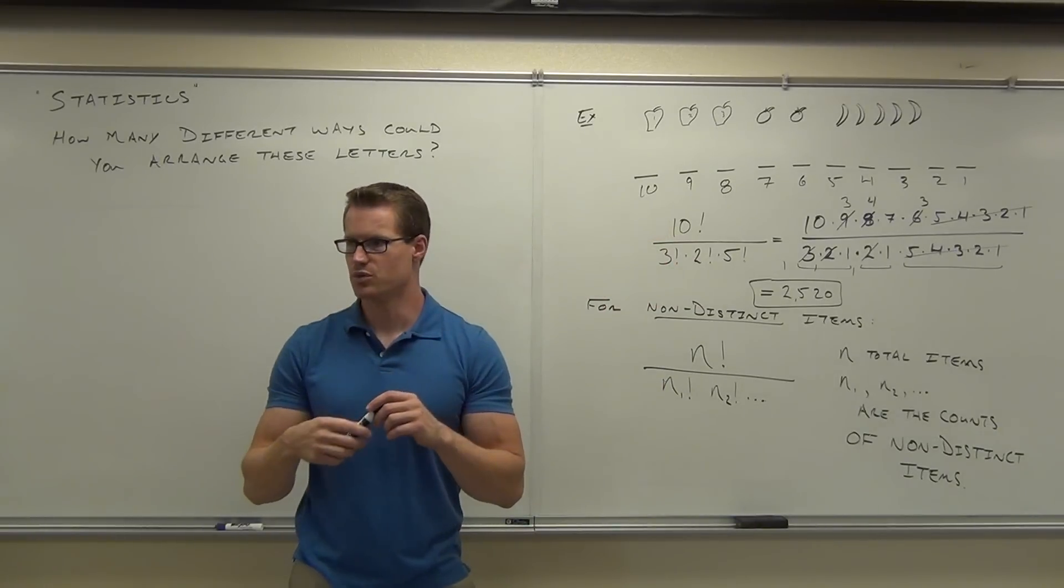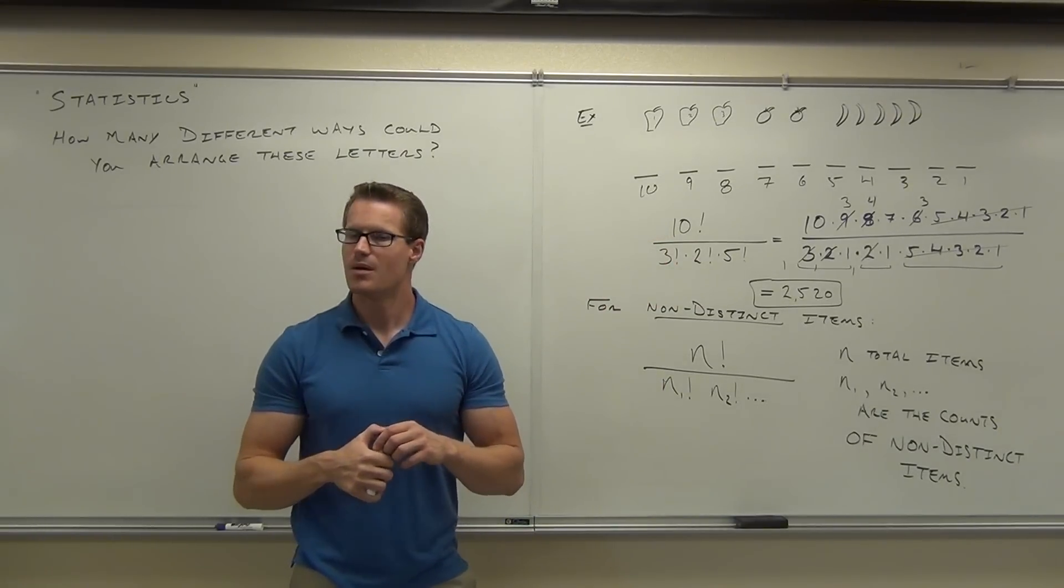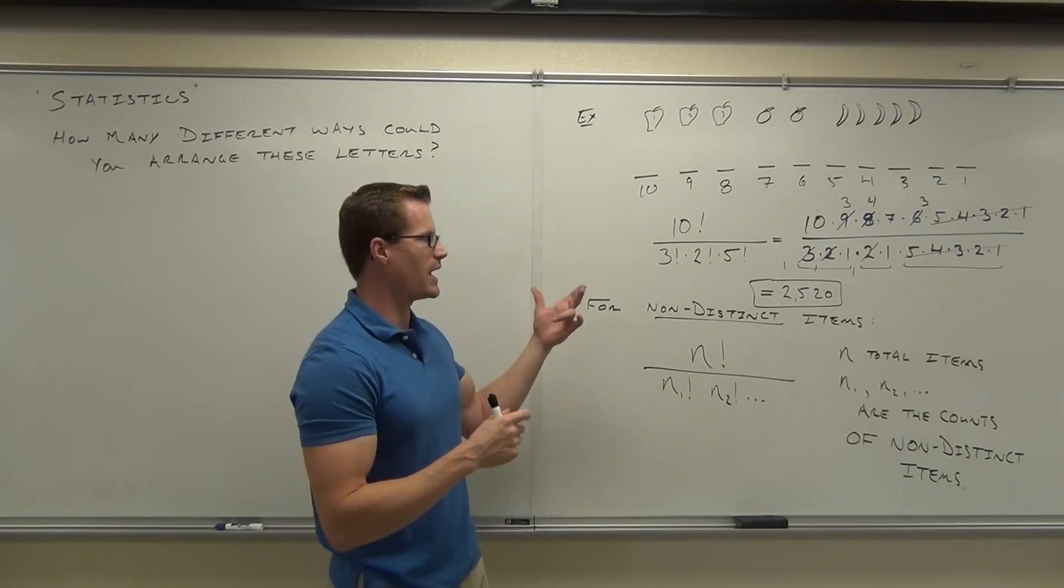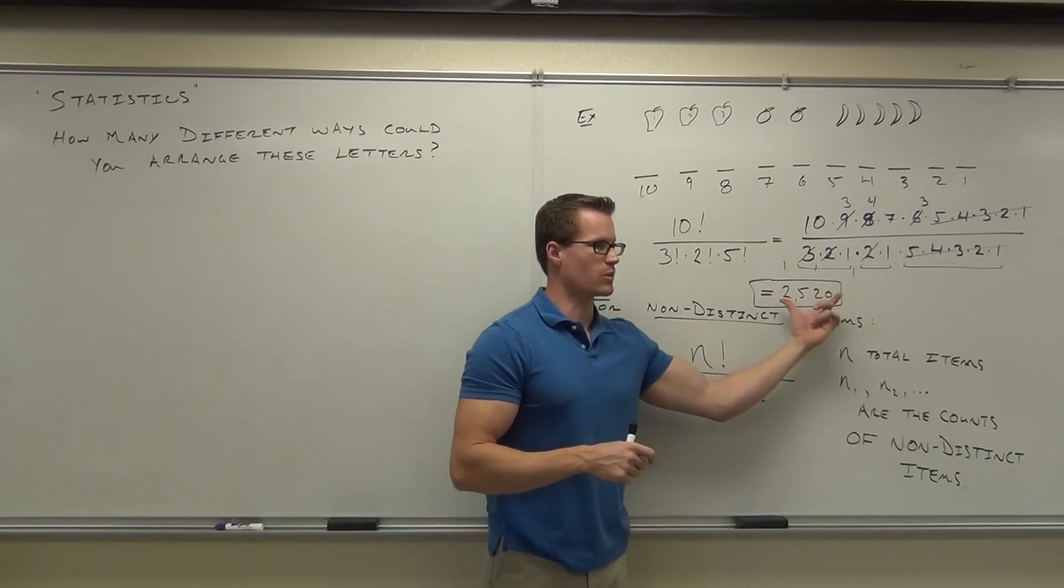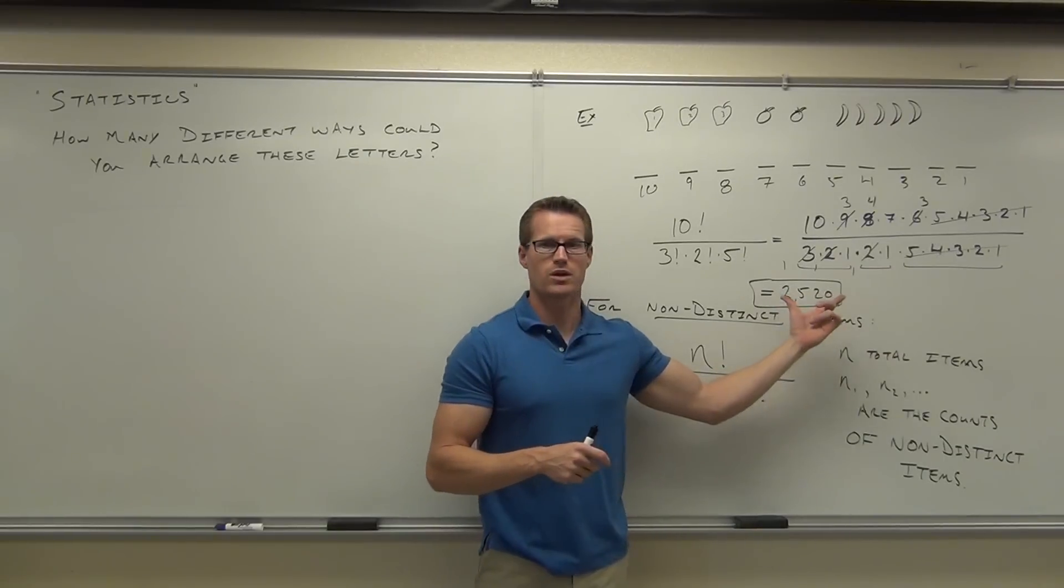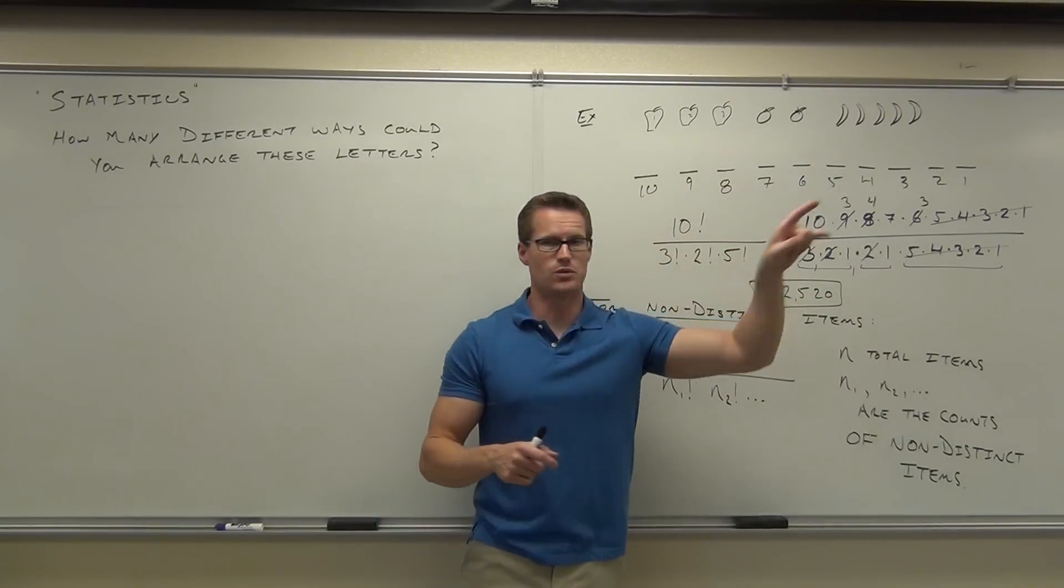If you did 10 factorial, you're going to get a huge number. But when we consider that we don't have distinct items like our apples, oranges, bananas, that really limits what we have. There's only 2,520 ways we can arrange these pieces of fruit that would be different.